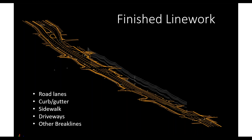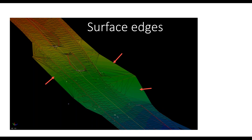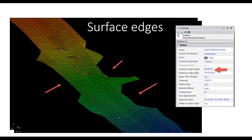Once all the line work is collected — curb, guard rail, lane lines, overhead lines, and so on — we select all those features and hit Create Surface. The surface fills in between the line strings. If there are long edge triangles, we clean those up quickly by adjusting the maximum edge length in the surface properties, reducing it from 500 down to 50 feet or smaller.